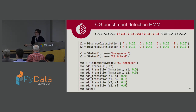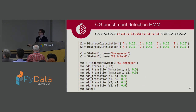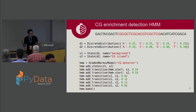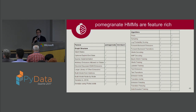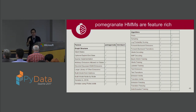You can also input transitions as a matrix rather than individual function calls — that's a useful option. Here are features of Pomegranate compared to another package for hidden Markov models called HMM Learn, which is a widely used Python package for hidden Markov models.